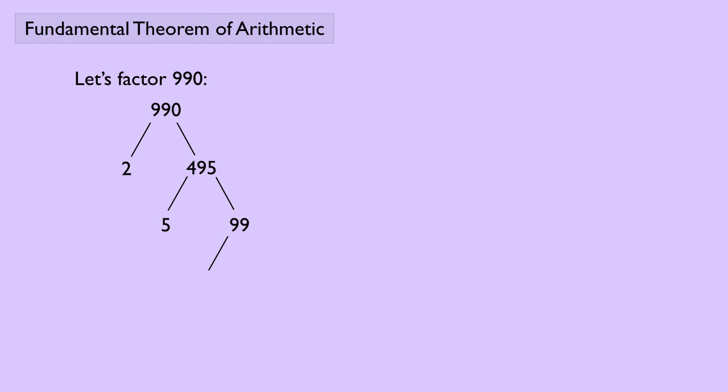And 99 is divisible by 11, and that leaves us with 9, and then the 9 can become a 3 and a 3. So we see that 990 is 2 times 3 squared times 5 times 11. And this is actually an application of the fundamental theorem of arithmetic.